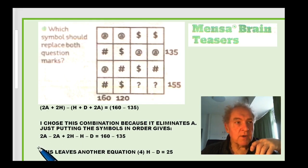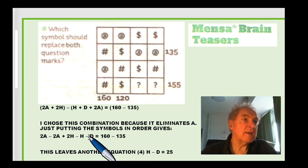Now, if I work it out, 2a minus 2a is no a's left. 2h minus h is an h. And then minus d is just minus d. So I'm left with, and I'm going to call this equation 4, h minus d equals 25.